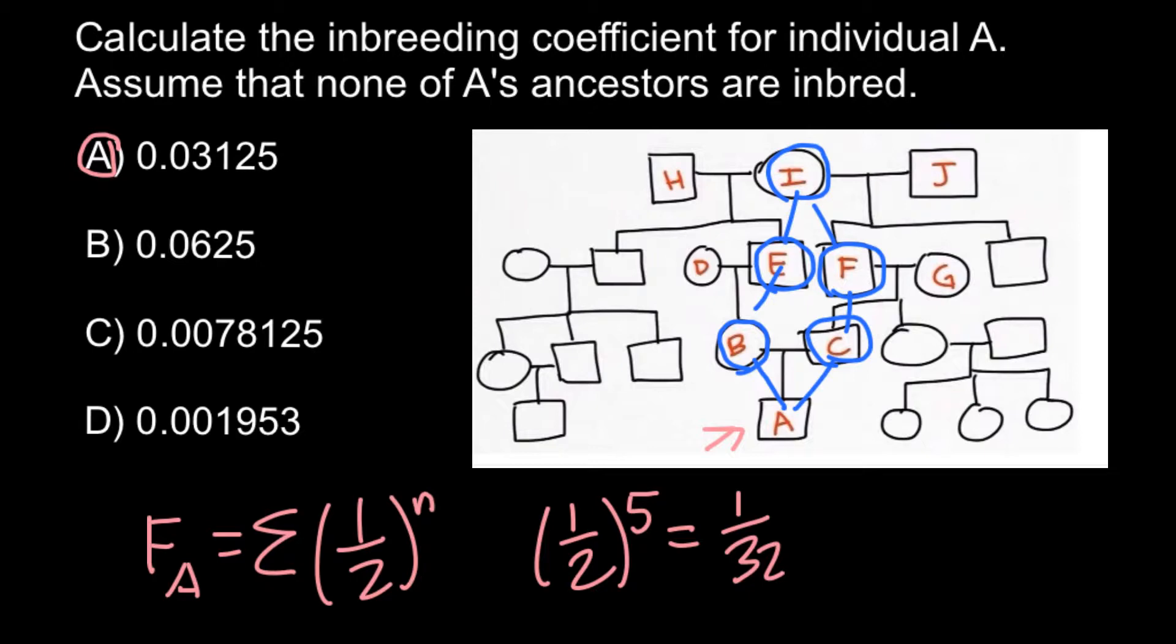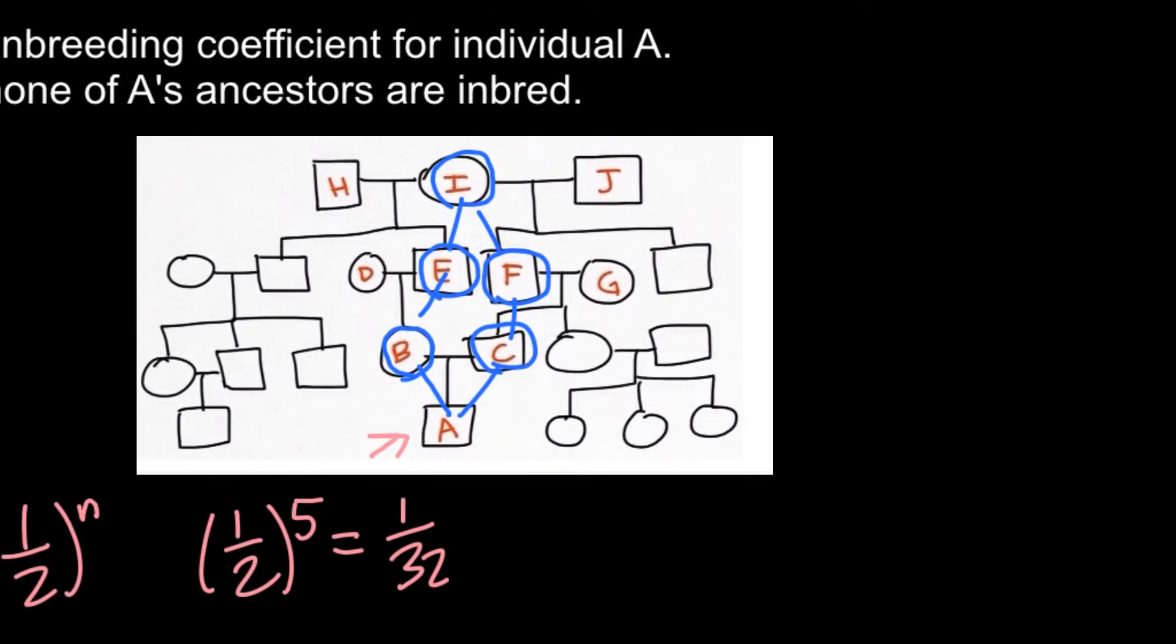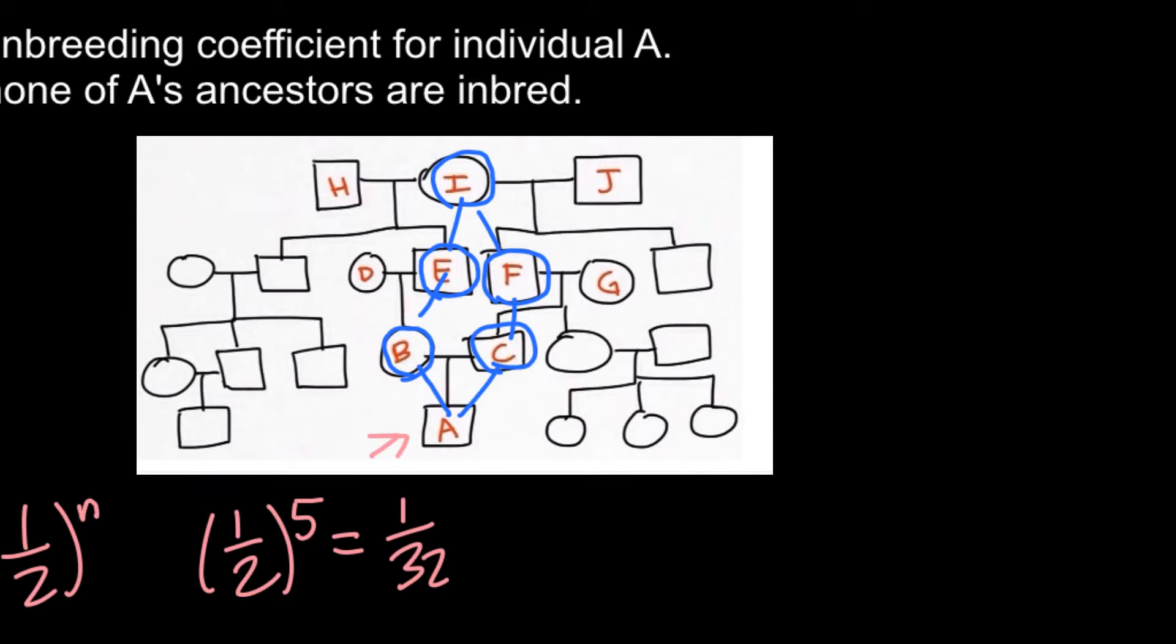So this is going to be the inbreeding coefficient. For example, compare such a pedigree where we have female, male. They have two children, female and male.